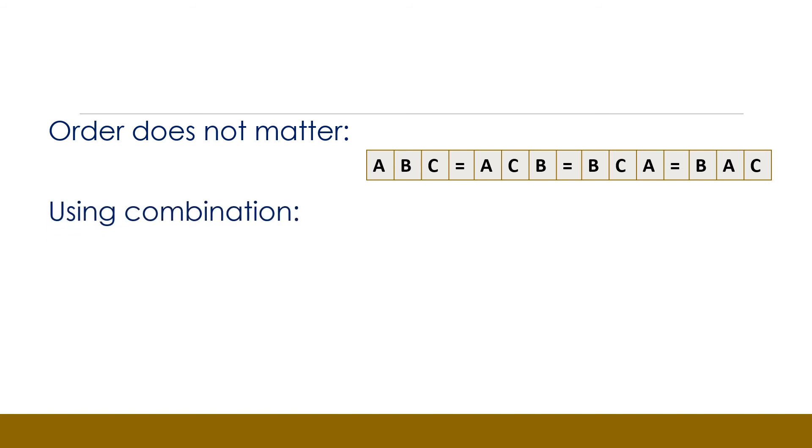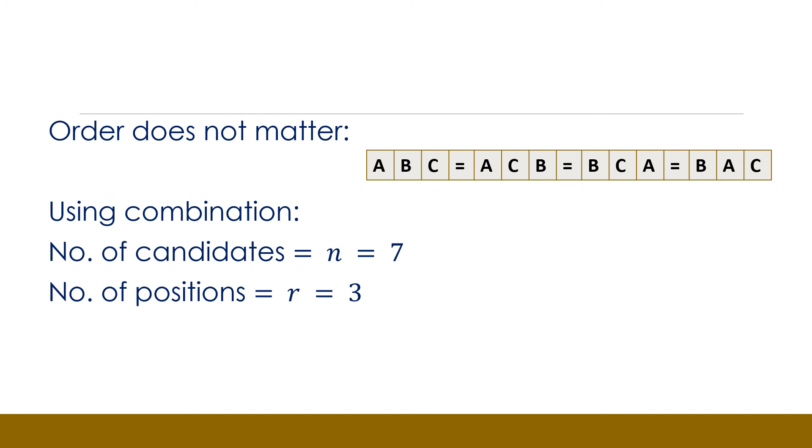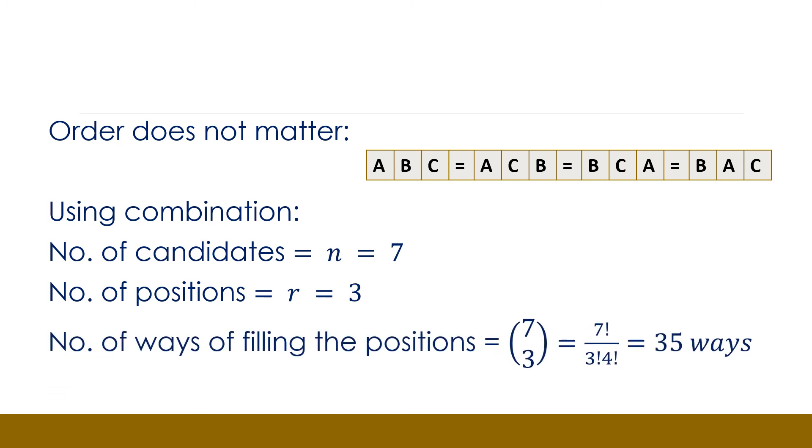Our problem is then one of combination. How can we select three people from a group of seven? So we have, using combination, the number of people in the group gives us n, which is seven. And we wish to select three people. So r is equal to three. The number of ways of filling these positions is seven, combination, three, which we use a calculator and we find that it is going to give us 35 possible ways.